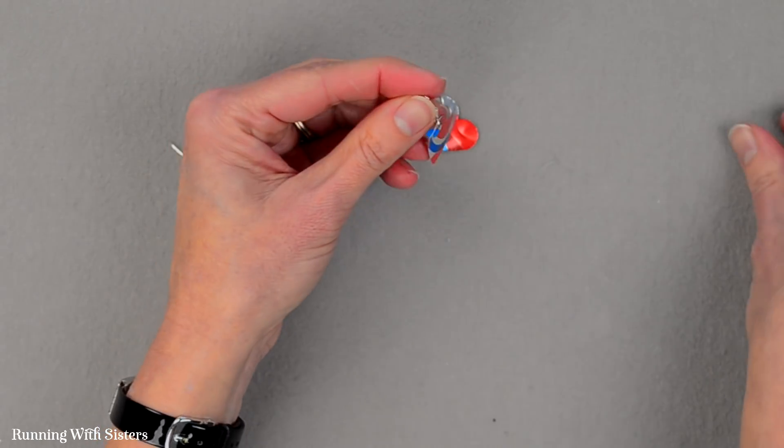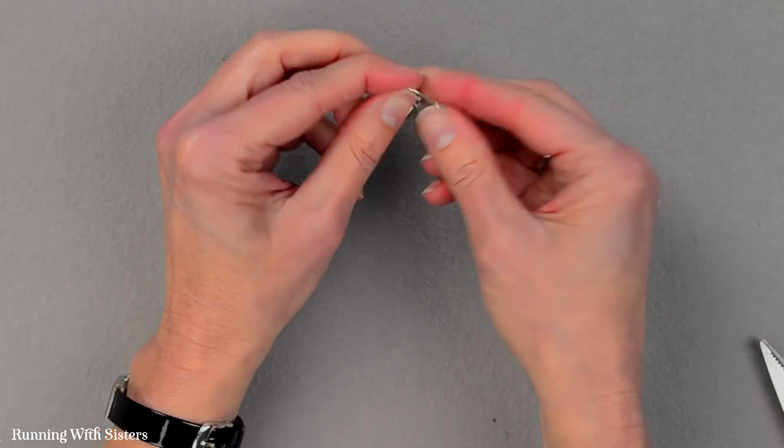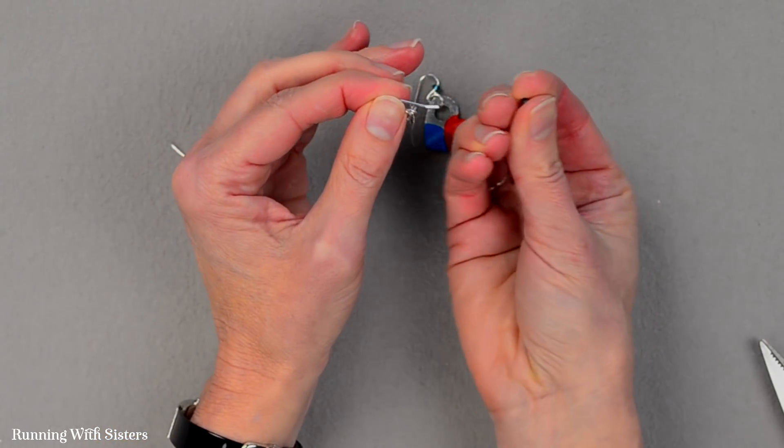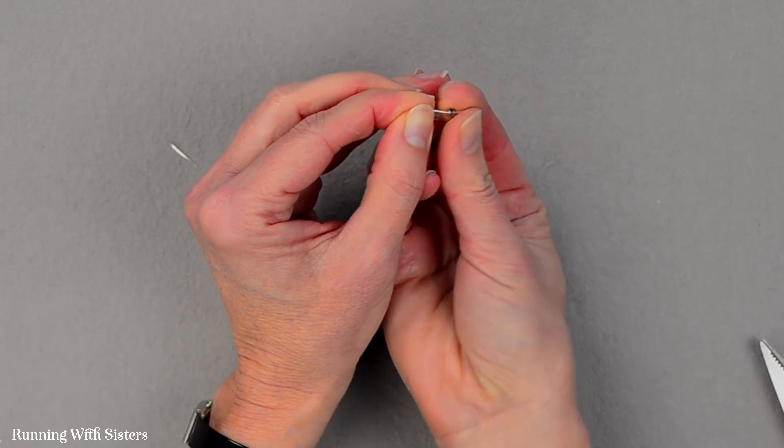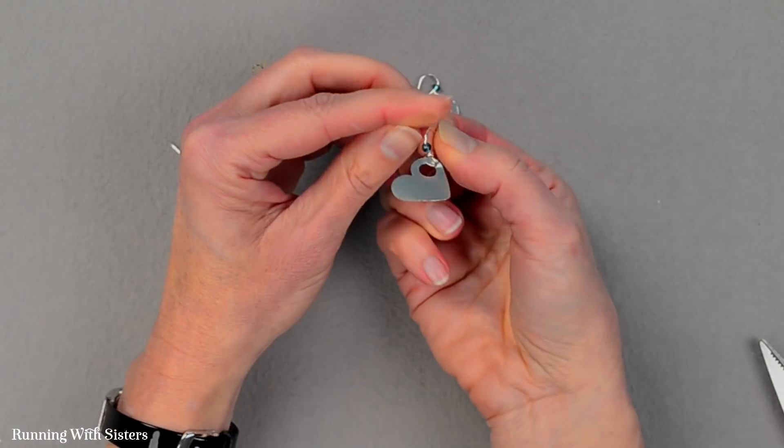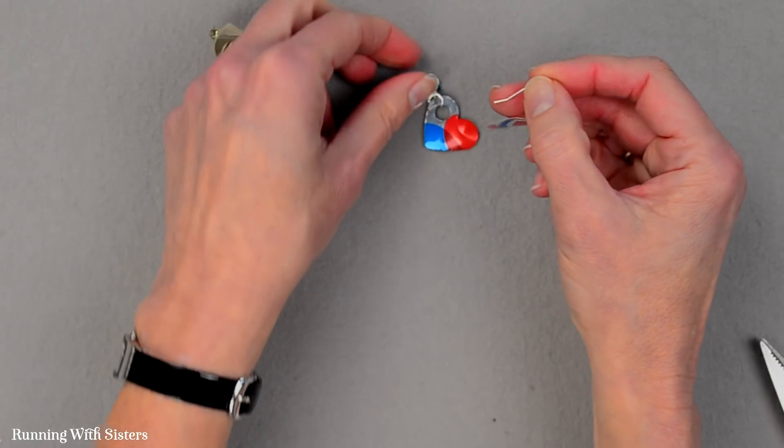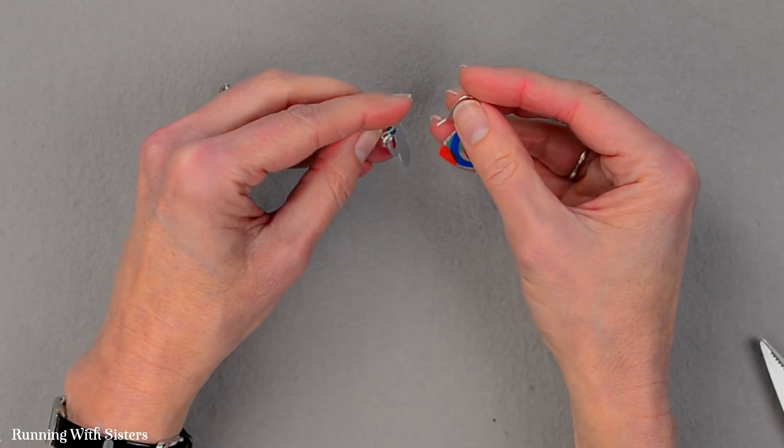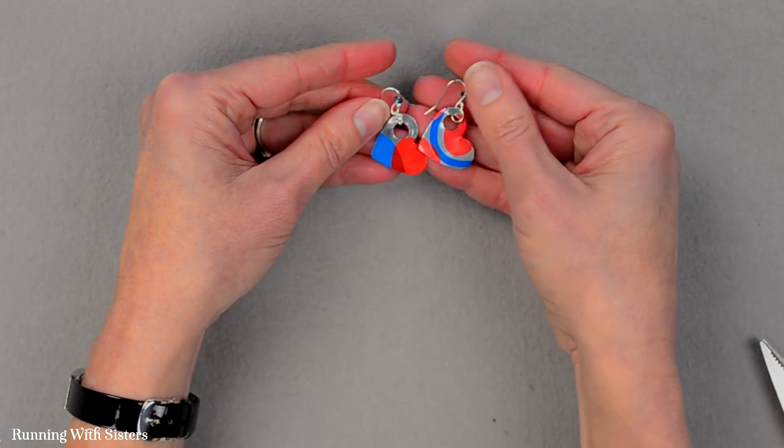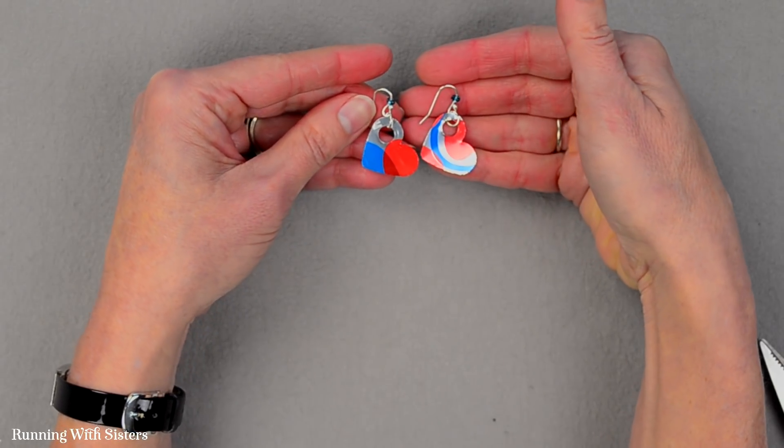We'll do the same thing with our other earring. Take the earring wire, back of it, and our little bead. Slide that on and up and over and around like that. And there are our darling punched tin heart earrings.